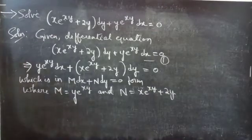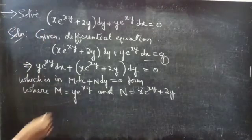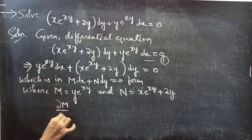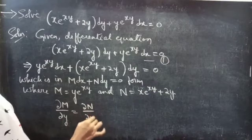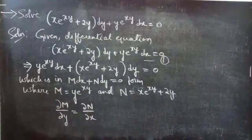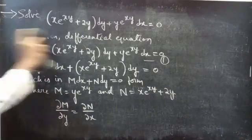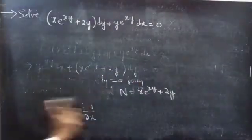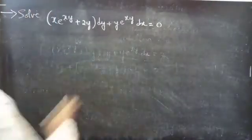We can say that the given differential equation is an exact equation if the partial derivative of M with respect to y is equal to the partial derivative of N with respect to x, that is, if ∂M/∂y equals ∂N/∂x, then the given differential equation is an exact equation.